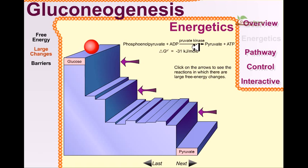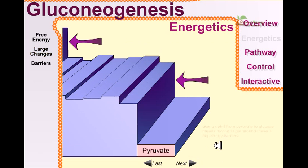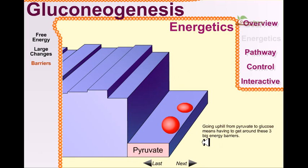Now, going uphill from pyruvate to glucose means getting around these three big energy barriers. We've seen that the ΔG for those reactions are highly negative.